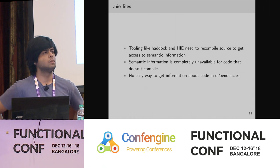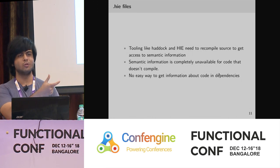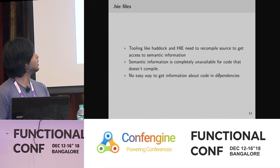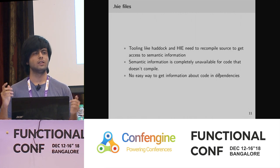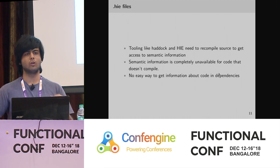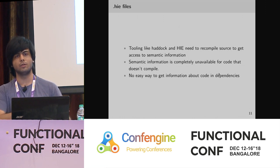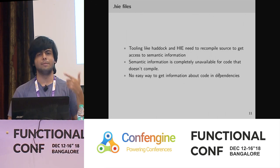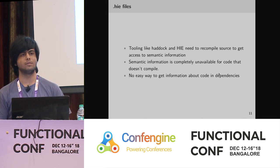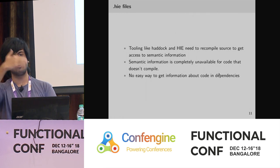This summer I worked on a project to get GHC to output something called .HIE files. When you compile Haskell, GHC generates .HI files from your source which contain information about your code. The problem is that when you use Haddock and enable documentation equals true and try to compile your code, you'll notice it doubles your compile times, because Haddock needs to compile all your source all over again just to know about what GHC already knows about.